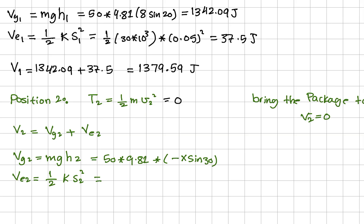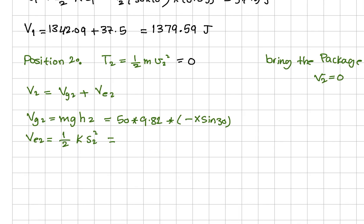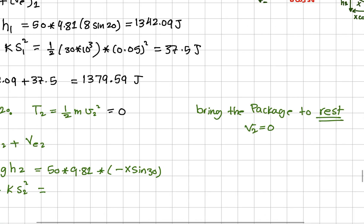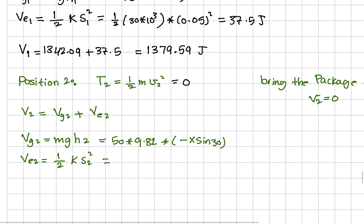Potential energy has two components, as you know. The gravitational one is mgh2, and the h2 here is the vertical component of x. This is the vertical component, but this is negative since it is underneath the datum. From here we can calculate Vg2 equal to -167.76x.